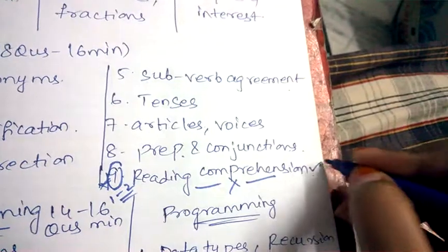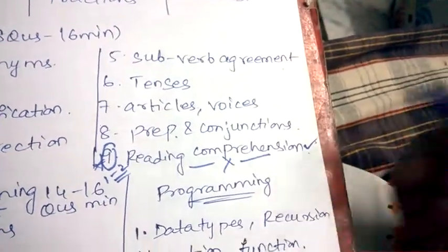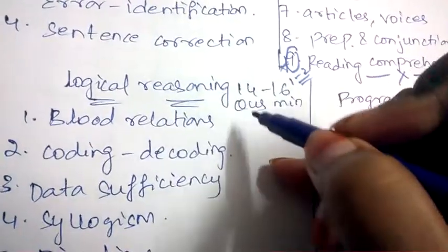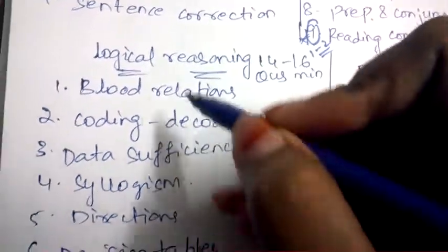One to two reading comprehensions will 100% appear in the Cognizant exam pattern, so concentrate more because this will be really time-consuming. Keep on practicing more and more passages. Coming to logical reasoning, they'll be asking you 14 questions out of which you'll be given 16 minutes.